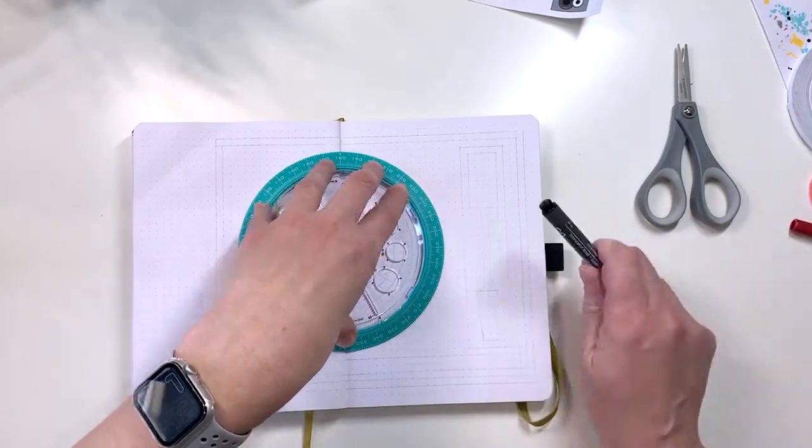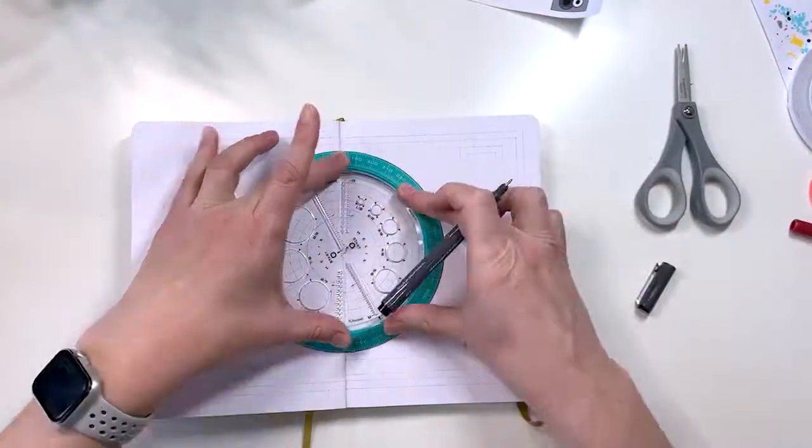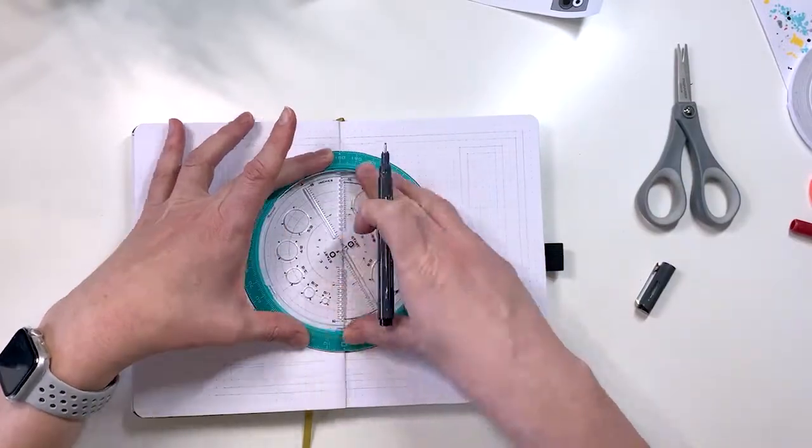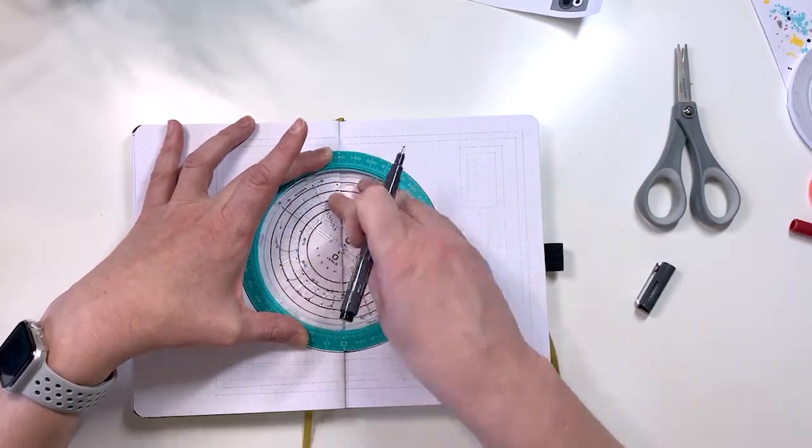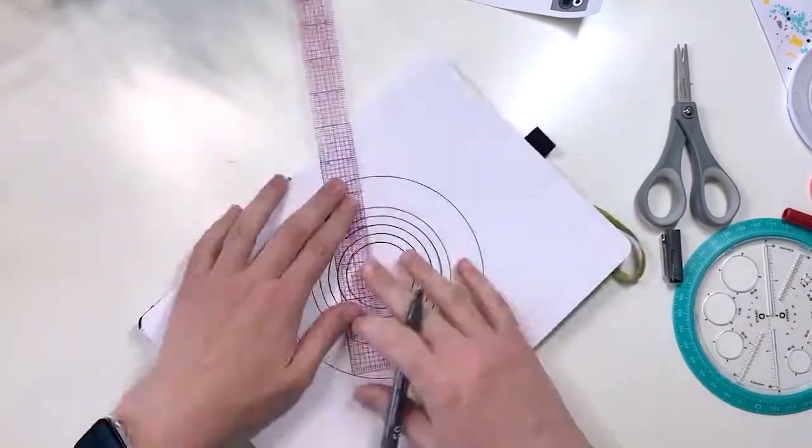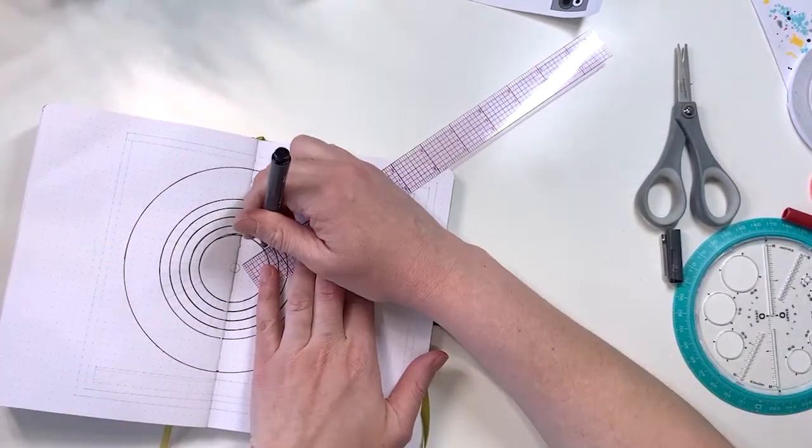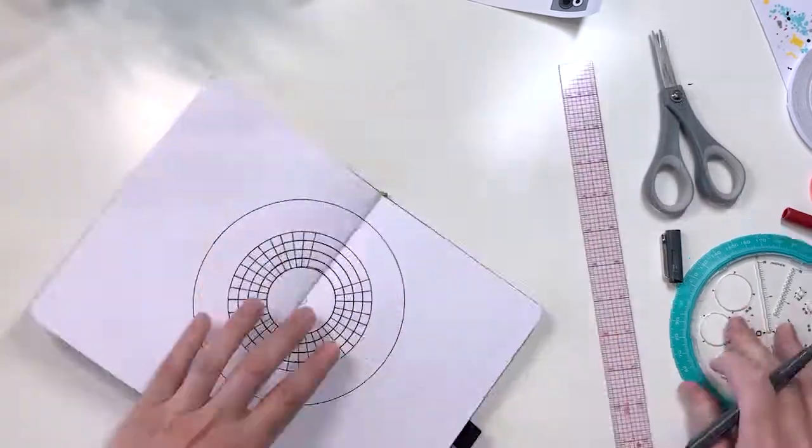This next page is my habit tracker page. This is the amazing circle stencil that I've pretty much used non-stop since I bought it in March, so I strongly recommend it. I wanted to get kind of fun with it and decided to do a turntable and have my habits be the LP or the record.